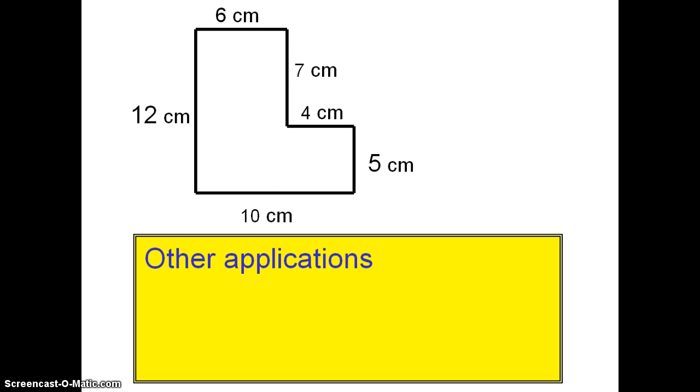By knowing all the sides of this irregular polygon, we could continue ahead to find the perimeter and also to find the area. We will do that at a different time.